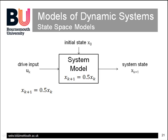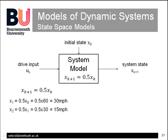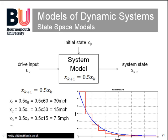Starting with the initial speed x0 of 60 miles per hour, the predicted next value becomes 0.5 times 60, or 30 miles per hour. After one second we move to the next time step: x1 is 30, and the prediction becomes 0.5 of 30, or 15 miles per hour. We continue step by step to map out the model behavior. At any given time k, the model will predict the system state x at the next time step k+1. It's a bit lumpy here because we've chosen a large time interval, but it does show the general behavior of the actual vehicle.